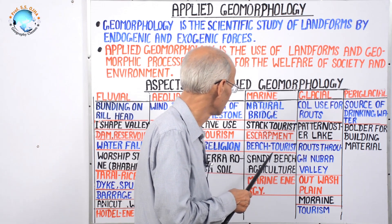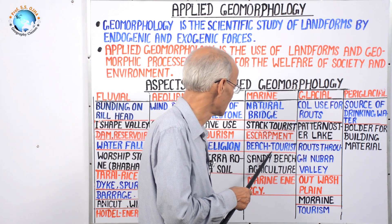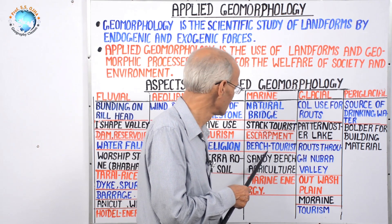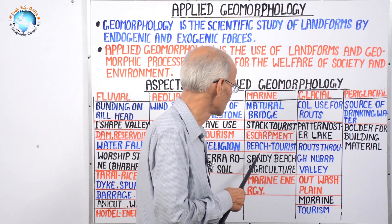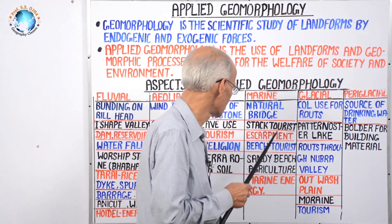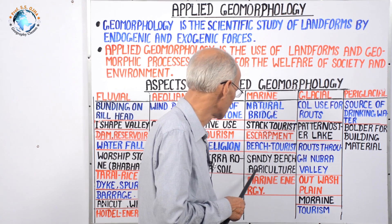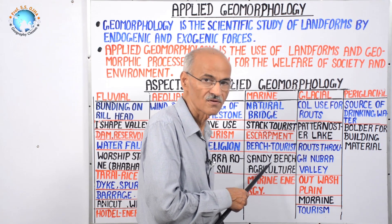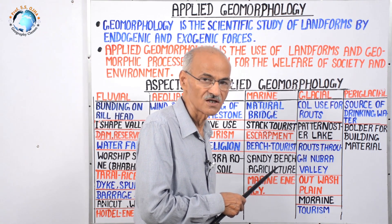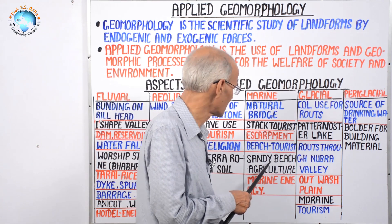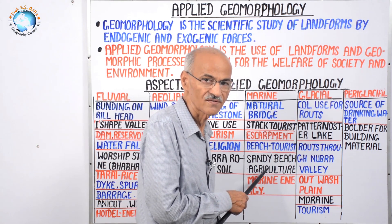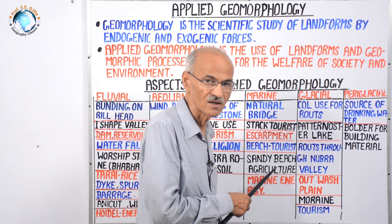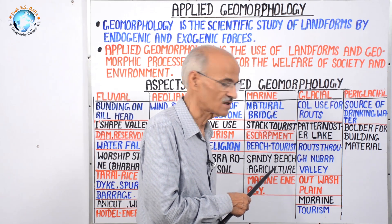Next is beach tourism. Beach is a very important feature along the coastline, and tourists — especially foreigners from high latitudes — visit Indian beaches to enjoy. Beaches are of two types: sandy beach and rocky beach. On the west coast of India, the beach is rocky because the western part has been raised by tectonic activity and eroded by marine waves from the Arabian Sea.